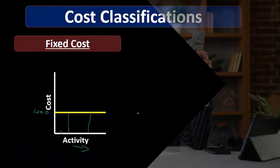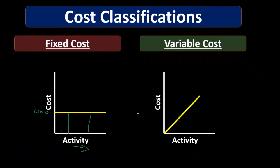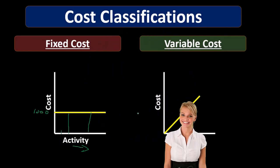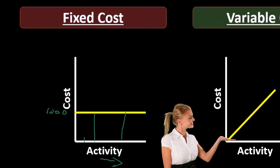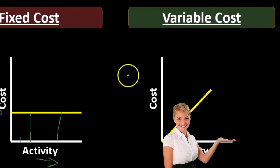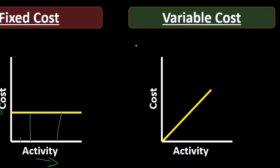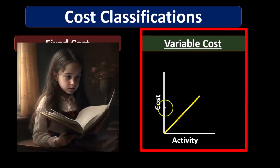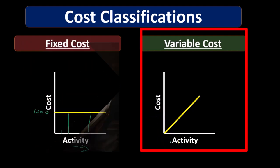The other major group we're going to have is variable costs. We want to basically break everything out into these two groups, even though not all costs fit neatly into them — we would really like it if they did, because that would simplify things and allow us to make accurate projections. Variable costs are going to go up with each new unit of production. For example, if we're making guitars and this is the cost of wood — the total cost of wood — and this is the activity, how many guitars we're going to make.